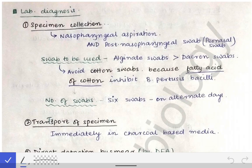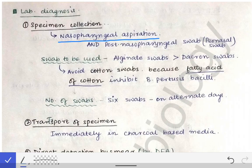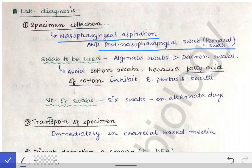The specimen collected is the nasopharyngeal aspiration, because there are common cold-like symptoms in pertussis as we discussed in the first part of the video. Due to those symptoms like coryza and running nose, we collect nasopharyngeal aspirations and also the posterior nasopharyngeal swabs, which are also called pernasal swabs.